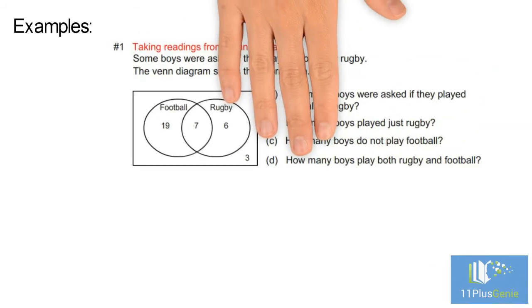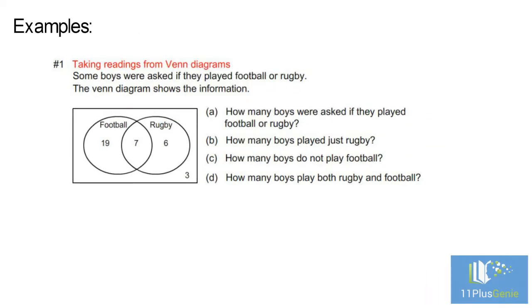Examples. Number 1. Taking readings from Venn diagrams. Some boys were asked if they played football or rugby. The Venn diagram shows the information.